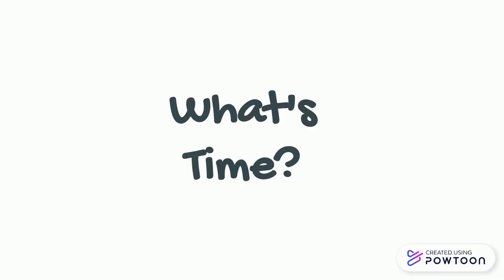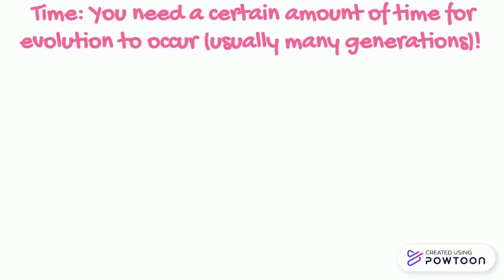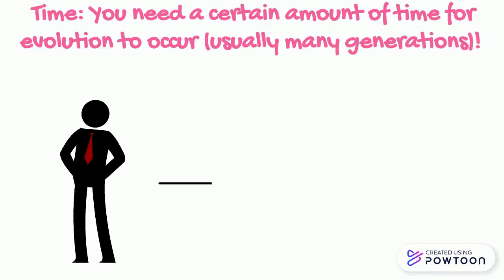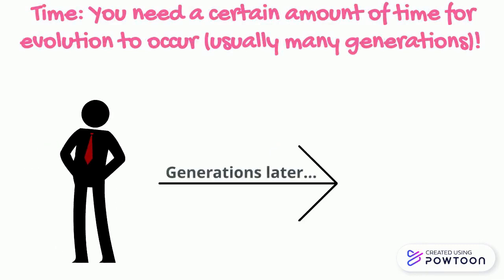Time is the last component needed. You need a certain amount of time for evolution to occur, and it does not happen overnight. You usually need many generations.